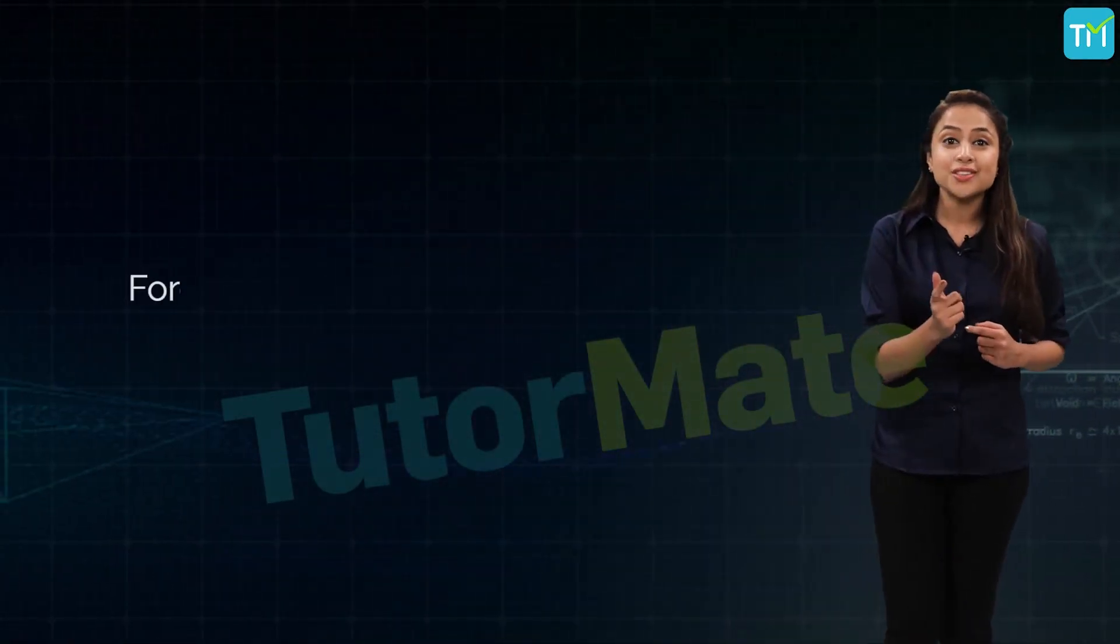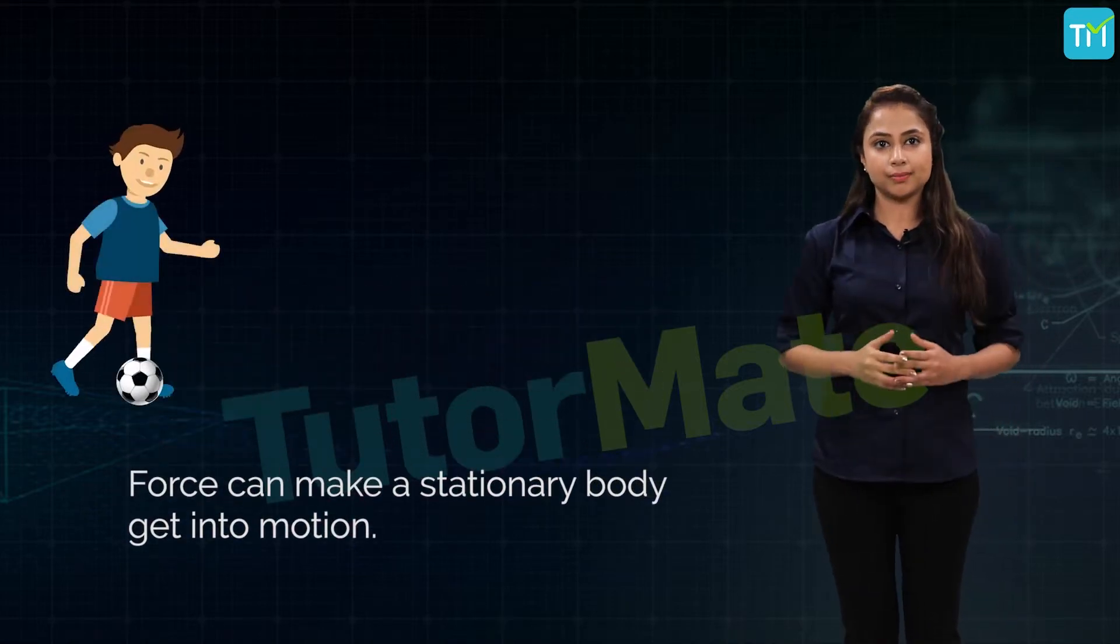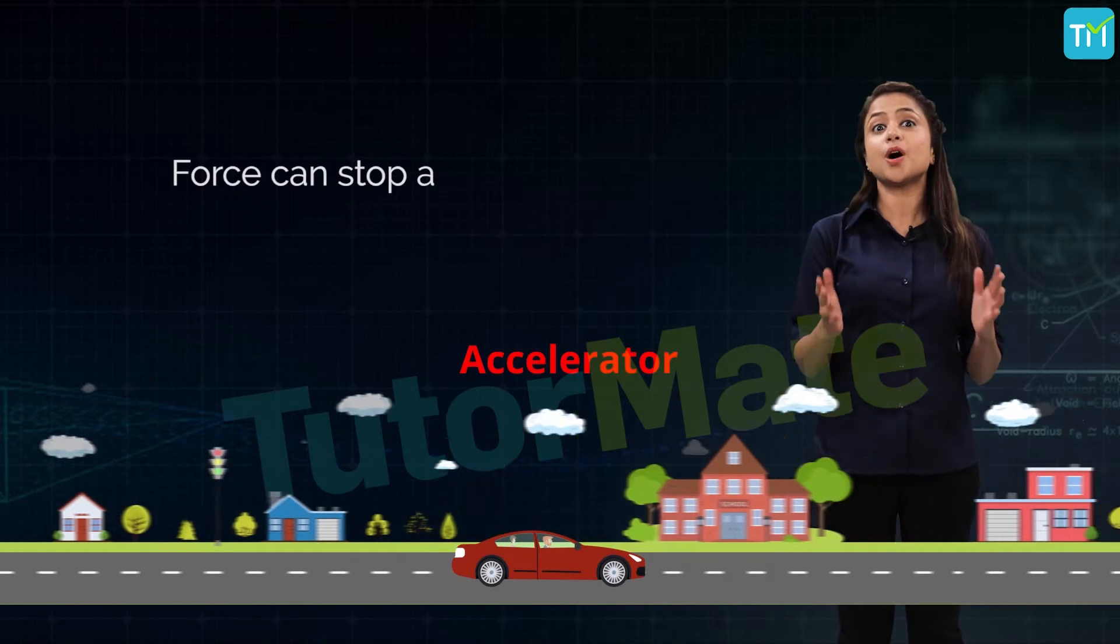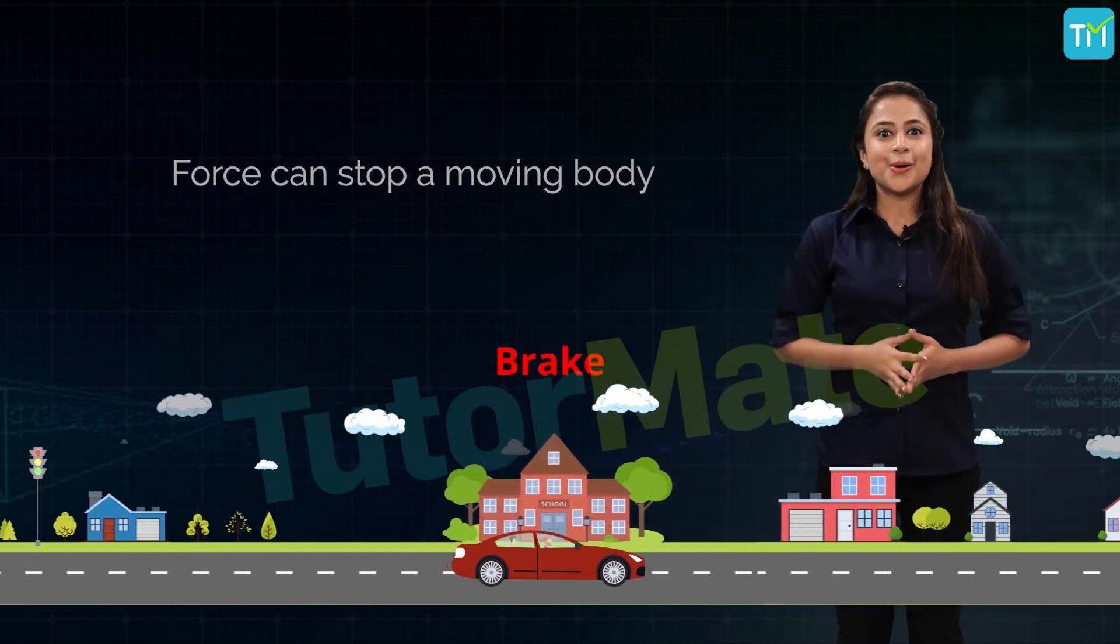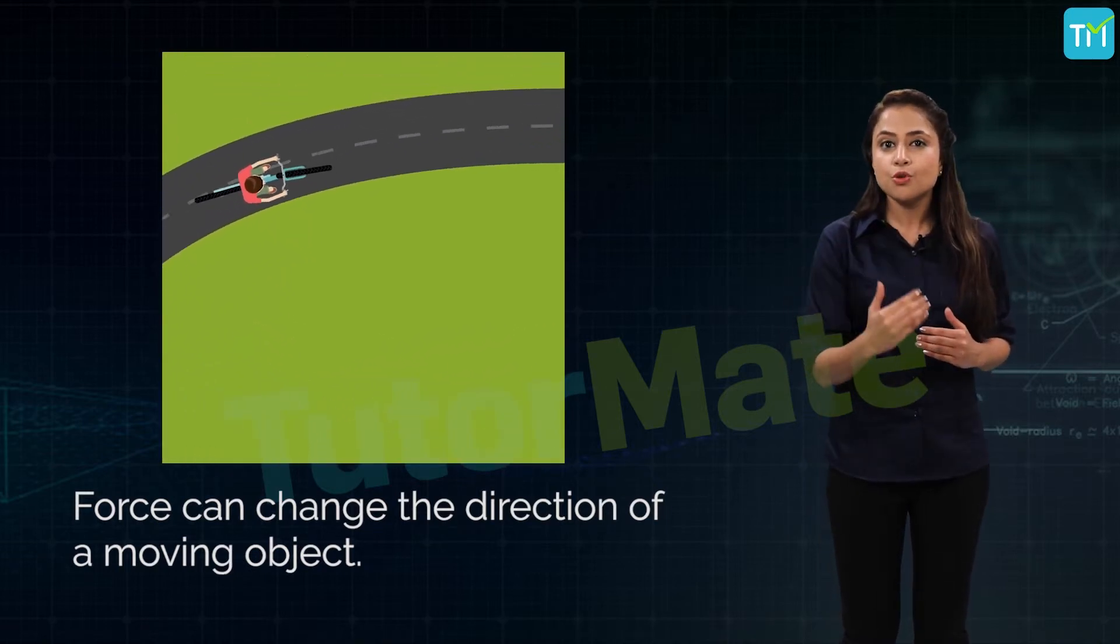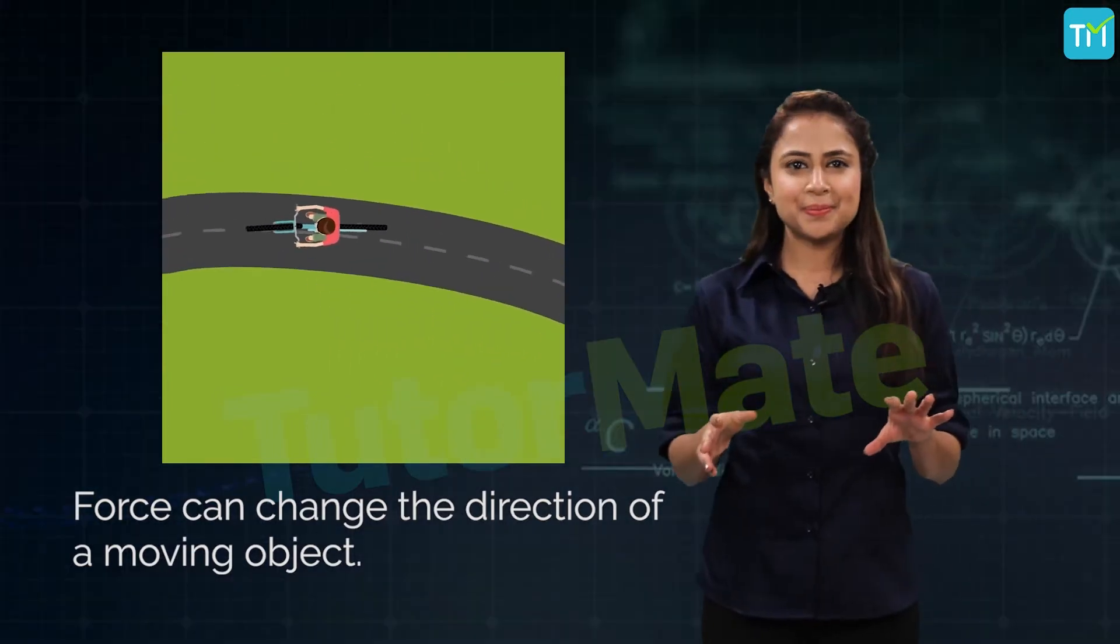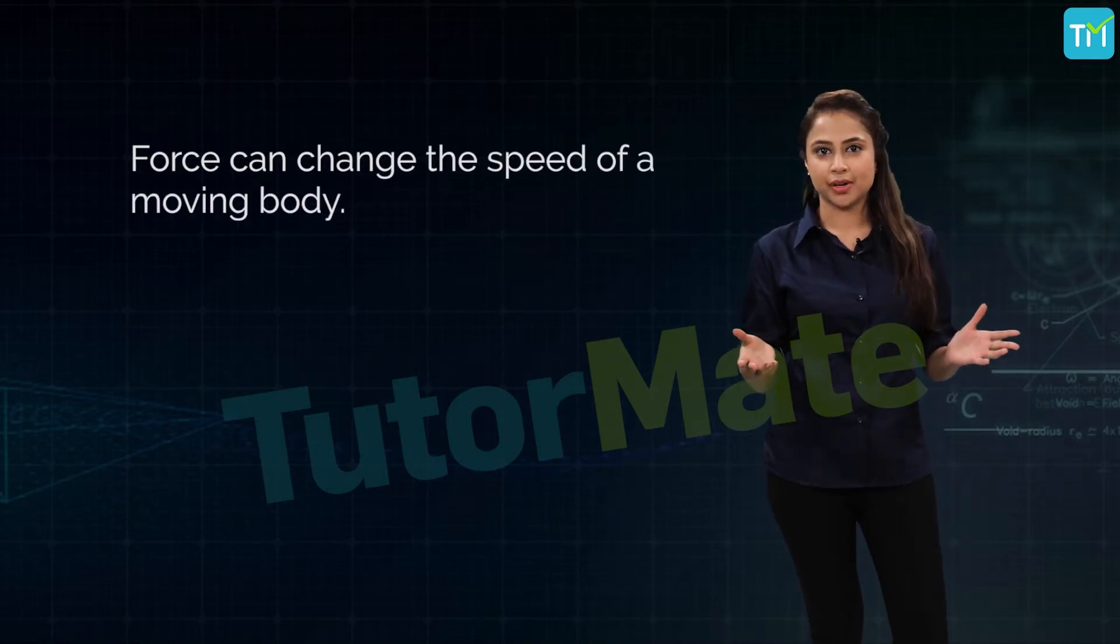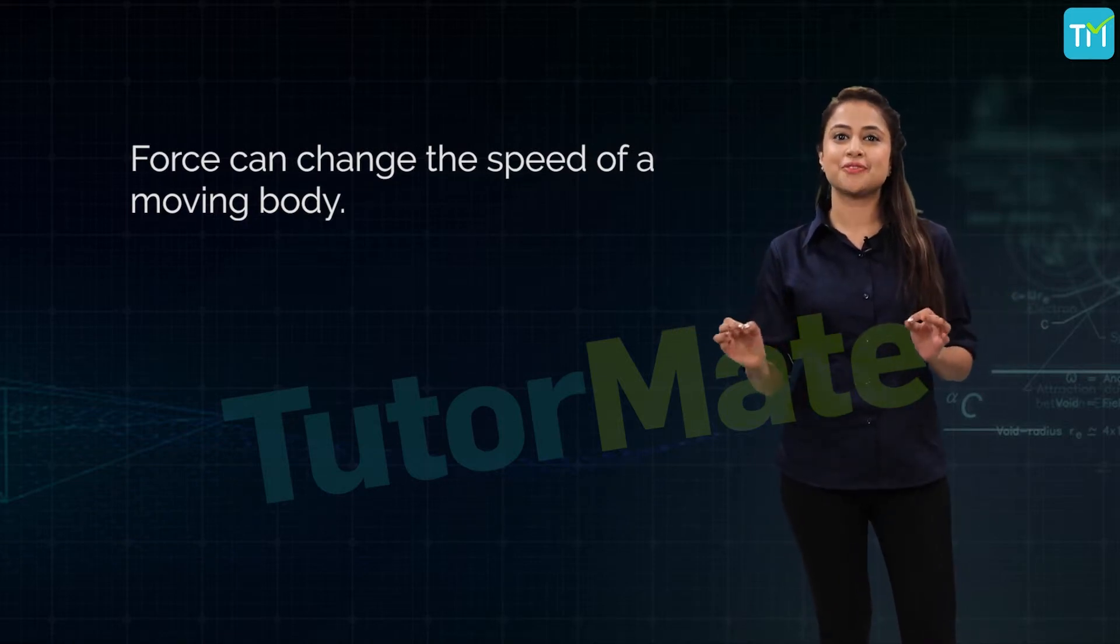Force can make a stationary body get into motion - for example, a football can be made to move by kicking it. Force can stop a moving body - for example, applying brakes to a running cycle or vehicle. Force can change the direction of a moving body - for example, by moving a bicycle handle, the direction of a running bicycle can be changed. Similarly, by moving a steering wheel, the direction of a running vehicle can be changed. Force can change the speed of a moving body - by accelerating, the speed of a running vehicle can be increased, or by applying brakes, the speed can be decreased.